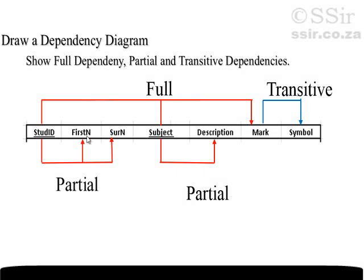First name is not at all dependent on whichever subjects the student chooses. Because first name and surname are dependent on student ID, this is a partial dependency — it depends on only a part of the primary key.